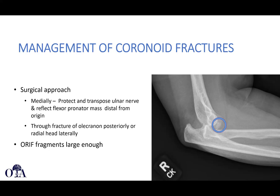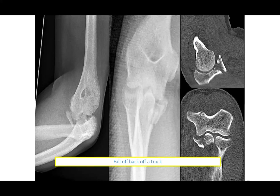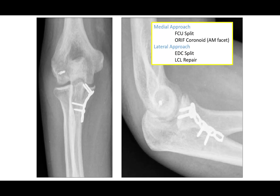Back to our case: the surgical approach comes medially, protecting and transposing the ulnar nerve, and reflecting the flexor pronator mass distally from the origin. If you had a radial head fracture, you could go through the radial head fracture site and address the coronoid first before replacing or fixing it — that's exactly what you would do with a terrible triad. Here's an example of a patient who fell off the back of a truck with a coronoid fracture better characterized on CT scan after reduction. This was treated with a medial approach, FCU split, anteromedial facet fragment fixation, and then in a separate lateral approach, an extensor digitorum communis split and lateral collateral ligament repair.